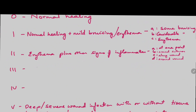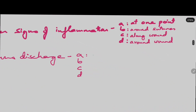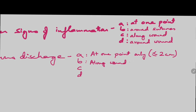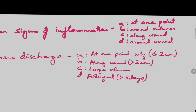Grade 3 is Erythema plus other signs of inflammation with clear or hemocerous discharge, but not pus as such — because Grade 4 will be pus. Grade 3 is divided into A, B, C, and D. 3A is clear or hemocerous discharge at one point only, meaning less than or equal to 2cm. 3B is along the wound, meaning more than 2cm. 3C is when there is large volume discharge. And 3D is when the discharge is prolonged — occurring for more than 3 days.